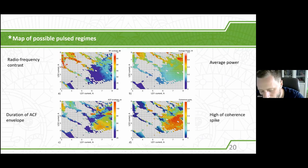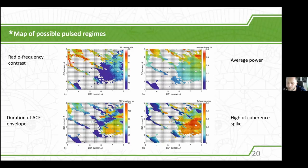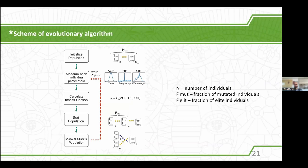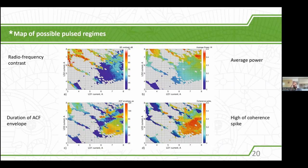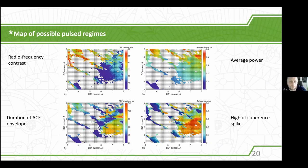Our first project was to implement genetic algorithms to optimize the output radiation. Different figures correspond to different parameters: average power, duration of the pulse, and radio frequency contrast. Fiber mode-locked lasers are sources of a train of pulses — a comb. By taking a Fourier transformation of the time-domain pulse train, you get another comb in the frequency domain. By analyzing this radio frequency spectrum, you can assess the quality of the mode-locking — it tells you about amplitude fluctuation and timing jitter of pulses.